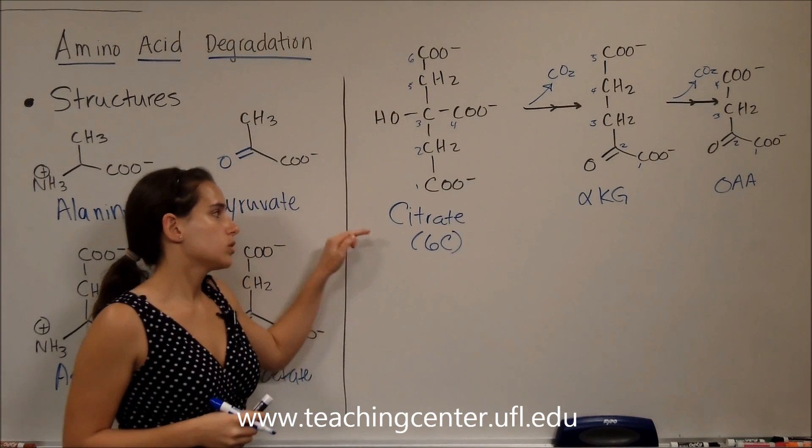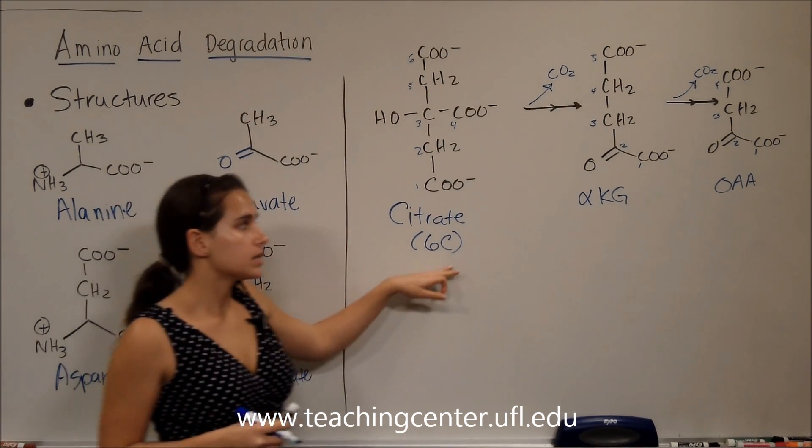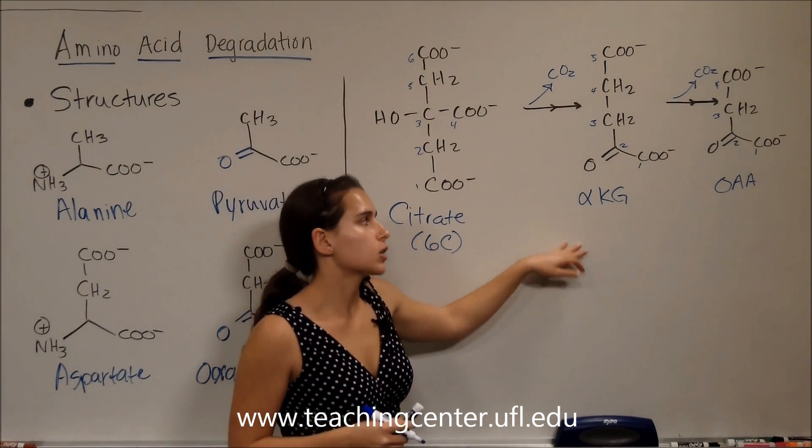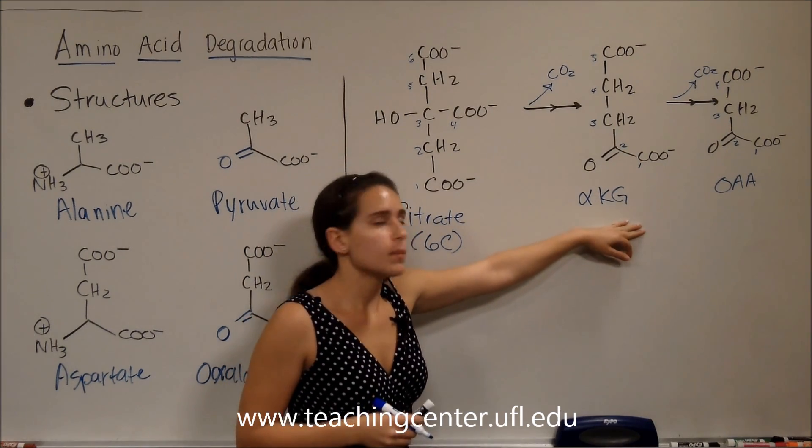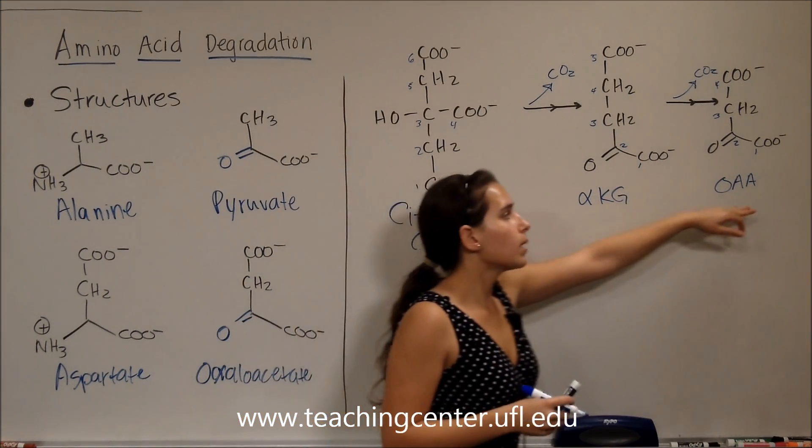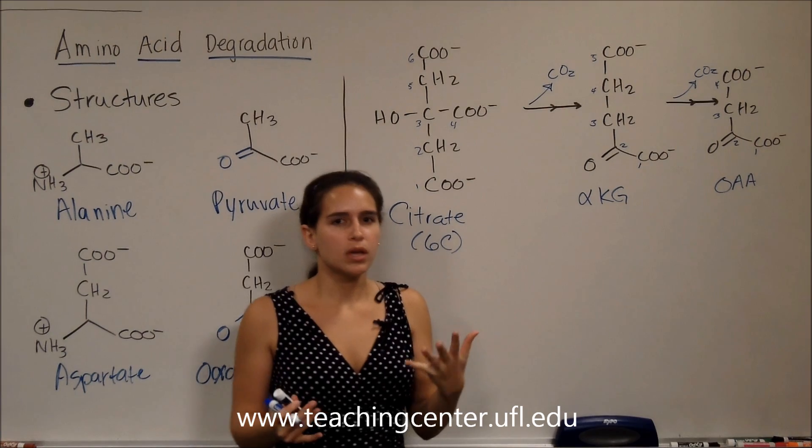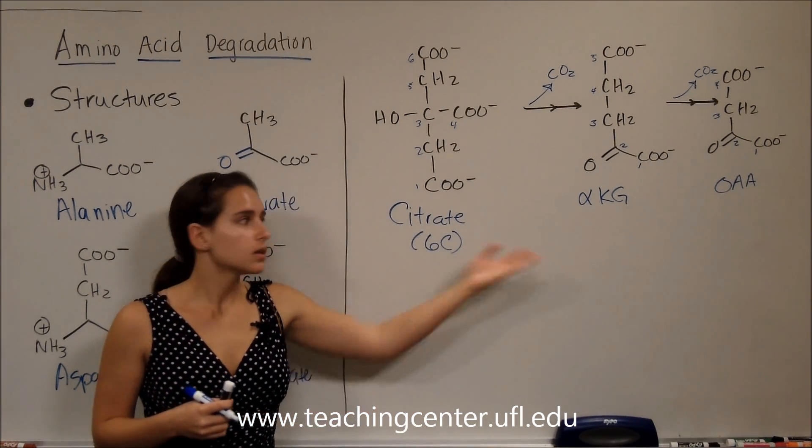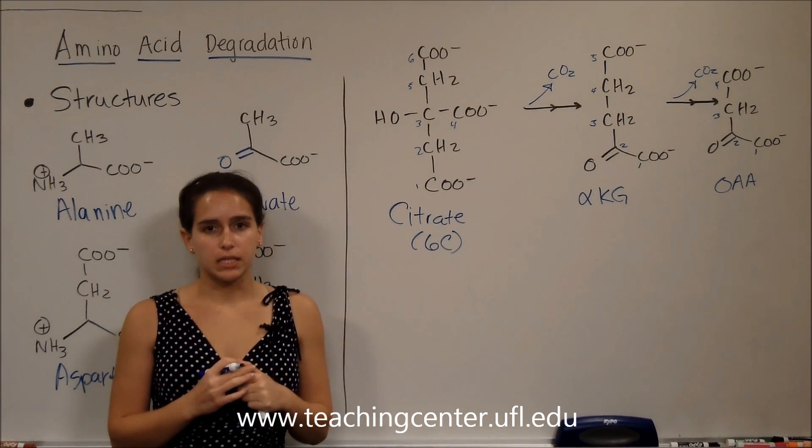You don't necessarily need to know the structure of citrate, but if you know that it has six carbons, and in the TCA cycle we lose one, make alpha-ketoglutarate, and another one, make oxaloacetate, that will help you remember the structures of these components of the TCA cycle.